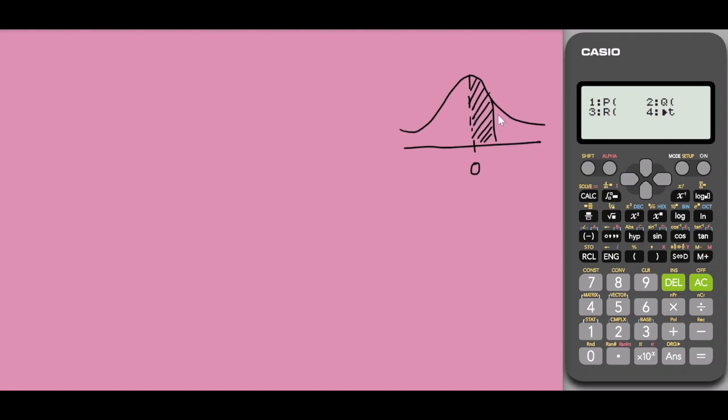On the right or the left starting from the mean value. So I could find the probability of Z from 0 to 2.2. 2.2 is this point over here by simply selecting Q 2.2.